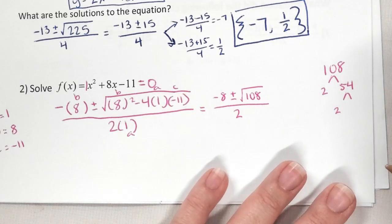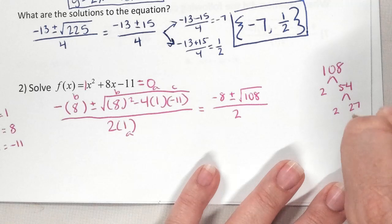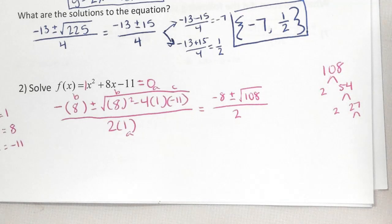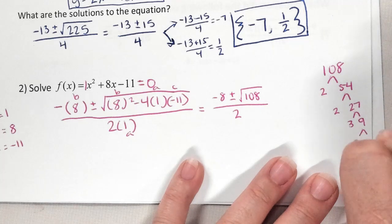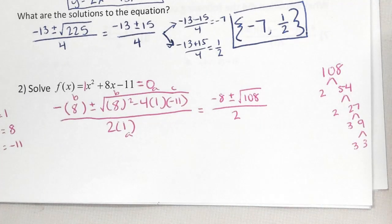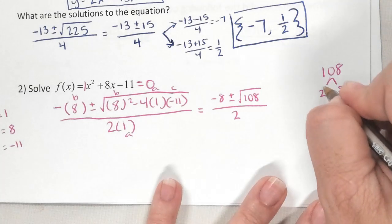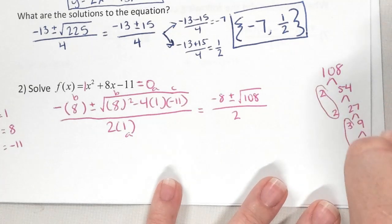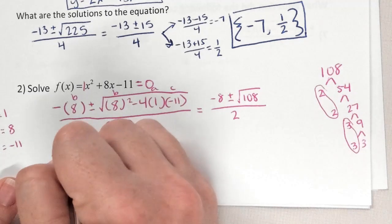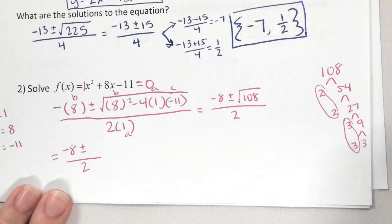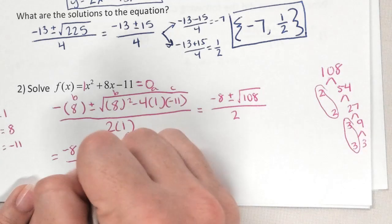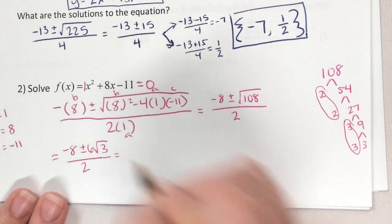2 also goes into 54 because it's even — 54 ÷ 2 = 27. Does 2 go into 27? No. What about 3? Yes — 9 times. And 9 is 3 times 3. So I have two 2s and two 3s, meaning I can take out a 2 and a 3. This becomes negative 8 plus or minus...